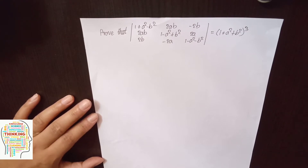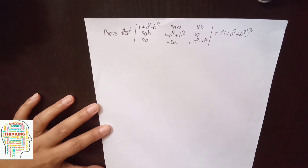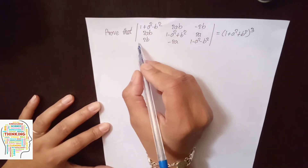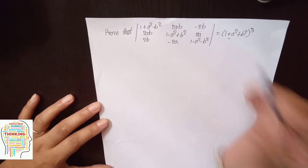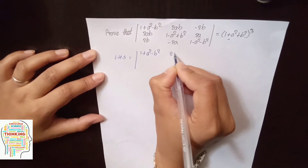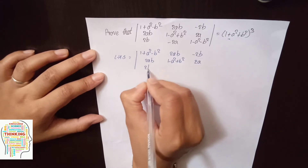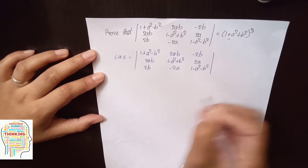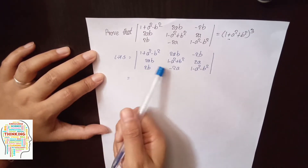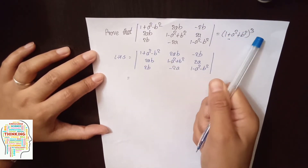Hello everyone. My name is Hassara Izilani. Today we will solve math and determinants. We will solve this problem. This is LHS and this is RHS. We need to prove LHS, but we need to prove (1 + a² + b²)³. We need to prove this.